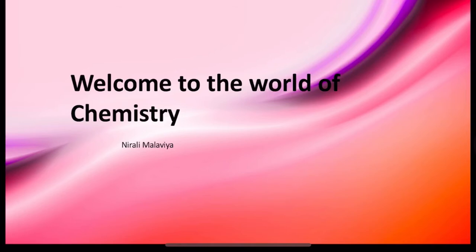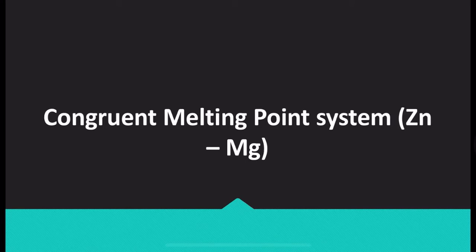Now we move on to today's main topic: the congruent melting point system — zinc and magnesium (Zn-Mg). A system is said to have a congruent melting point when it melts at a sharp temperature to give a liquid of the same composition as the solid. The temperature at which such a compound melts is called the congruent melting point.